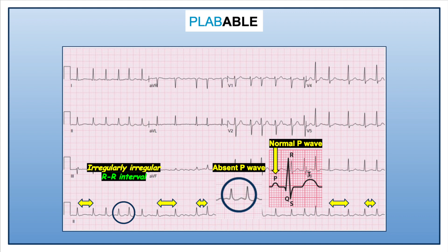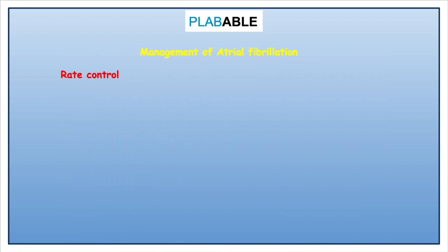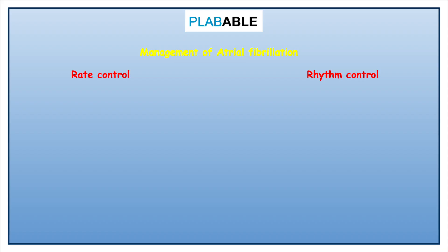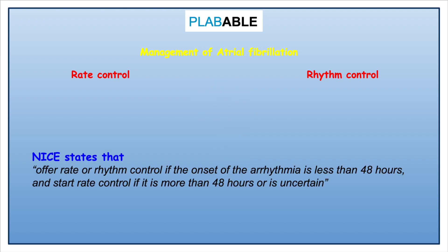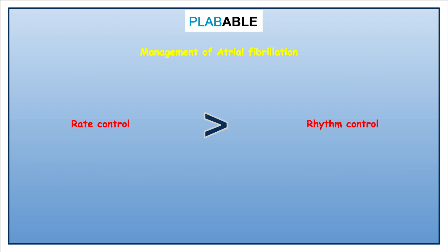Once the diagnosis is confirmed, management is based on correcting the rate, the rhythm, and anticoagulation to prevent the risk of stroke. NICE has very clear guidelines stating that we should offer rate or rhythm control if the onset of arrhythmia is less than 48 hours, and start rate control if it is more than 48 hours or uncertain. For exam purposes, rate control is first-line management in most patients, apart from a small subgroup for whom we offer rhythm control.